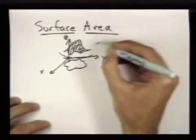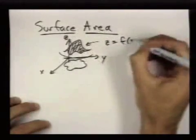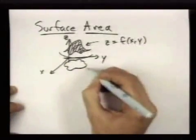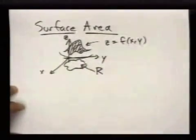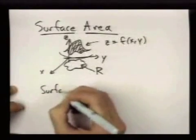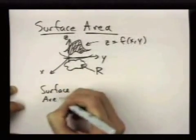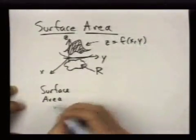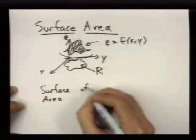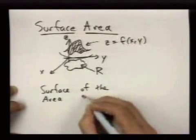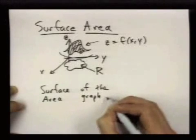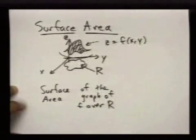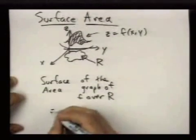So if this is given as the graph of a function f of xy, by the formula for the surface area over this region, let me call it R, is as follows. So let me say it's the surface area of the graph of f over R is given by this formula.